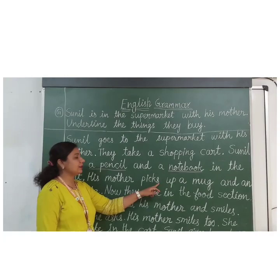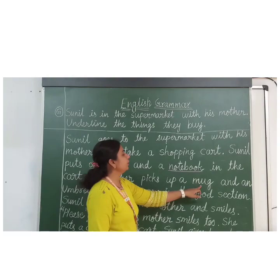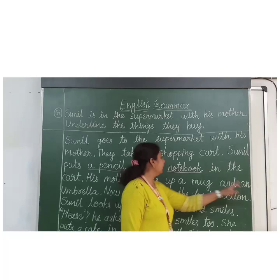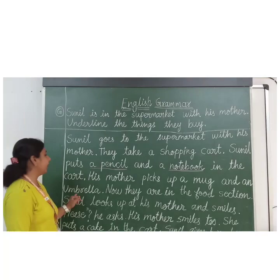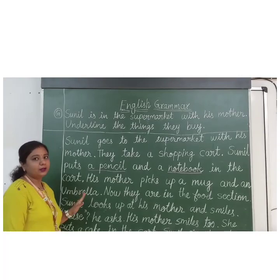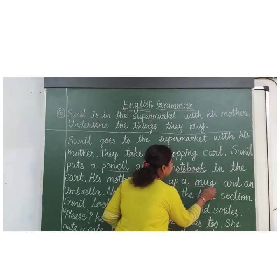His mother picks up a mug and an umbrella. Uski mummy ne ek mug aur ek umbrella uthaya. So here, mug and umbrella are things. You have to underline them.